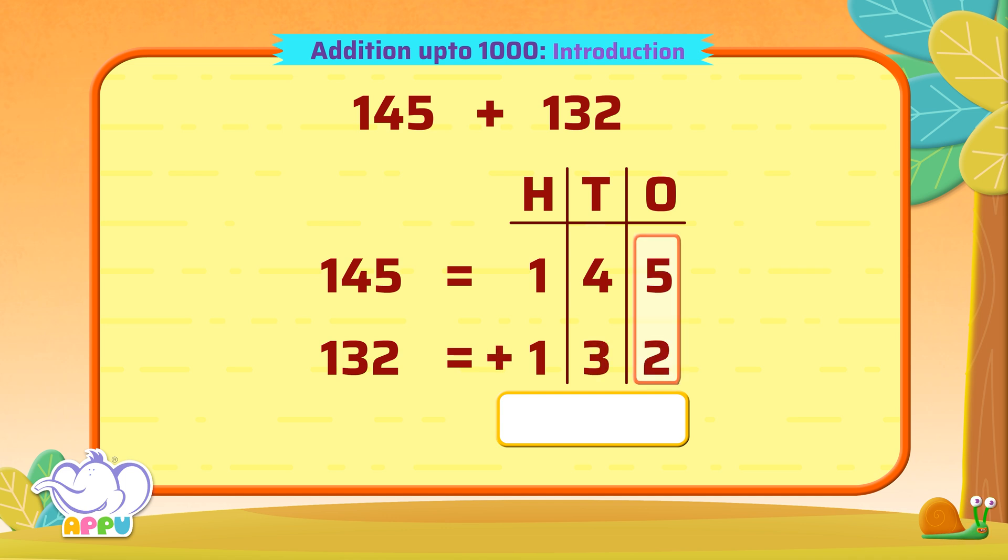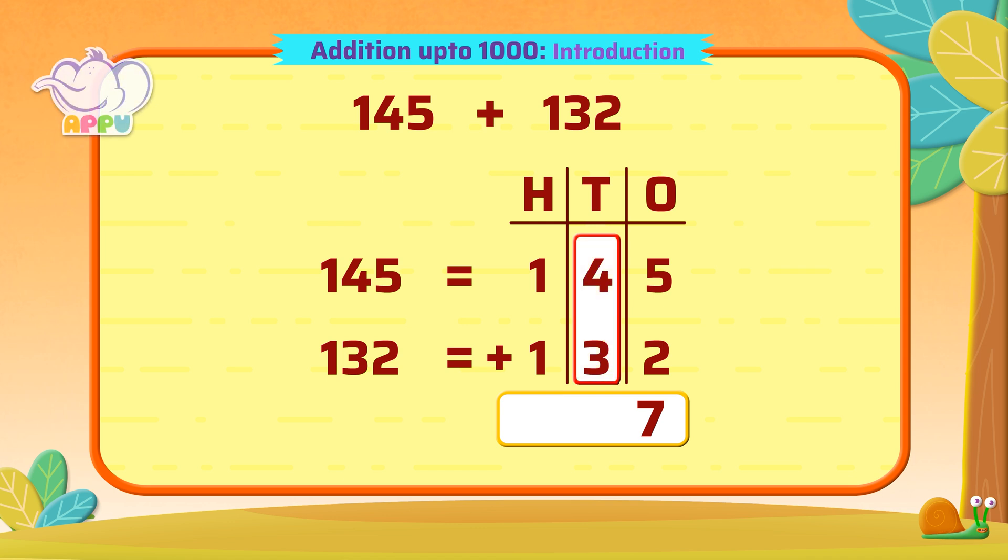We add the ones first. So 5 plus 2 is equal to 7. 7 in ones place. Then the tens. 4 plus 3 is equal to 7. 7 in tens place.